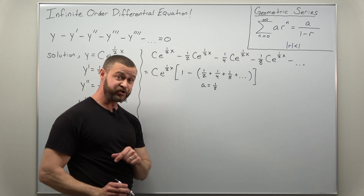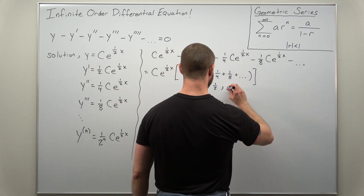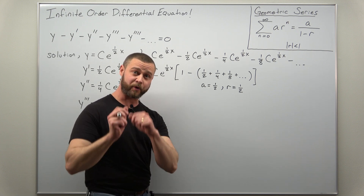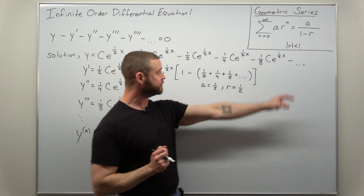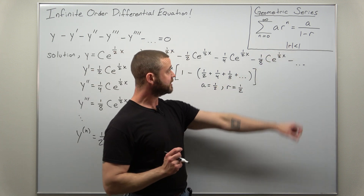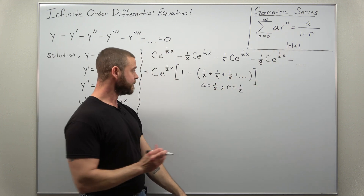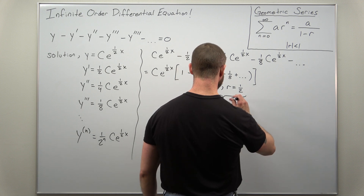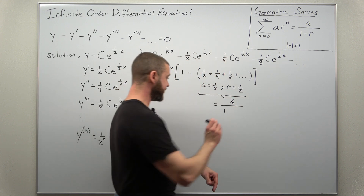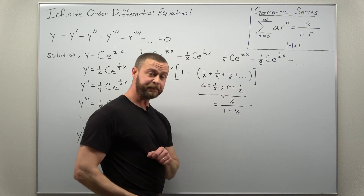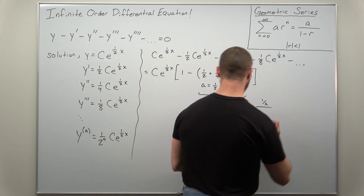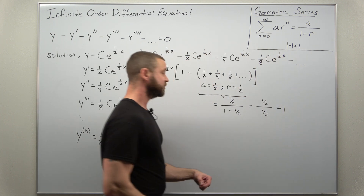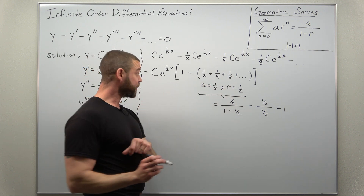The first term a is one half, and going from one term to the next is an additional factor of one half, so that's the common ratio r. Since you're all experts in calculus 2 and infinite series, you recall that for a geometric series when the ratio in absolute value is less than one, you get a convergent geometric series and we can write down the sum. We have a equals one half, r equals one half, so the sum is a over one minus r, which is one half divided by one minus one half. The numerator is one half, one minus one half is one half, and something divided by itself is one.